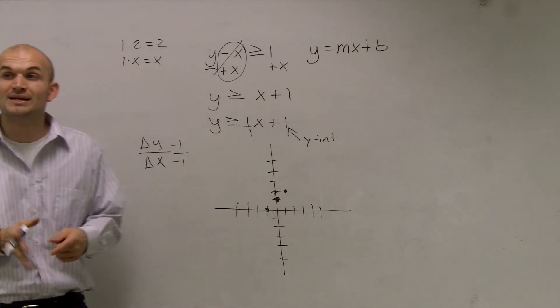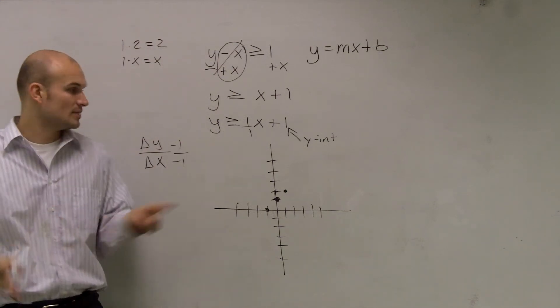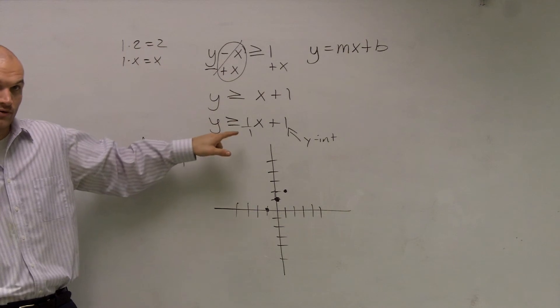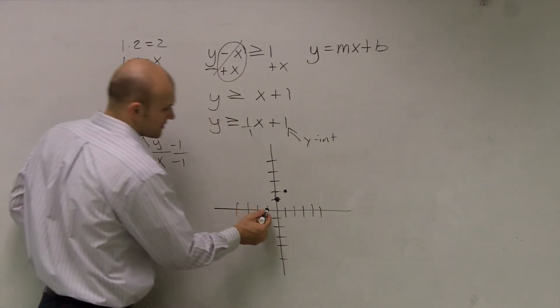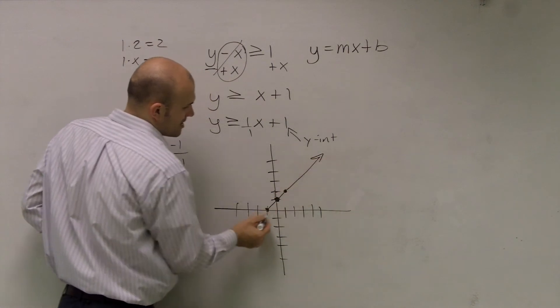Now, then, next thing I need to do is I need to determine, is it going to be a dashed or a solid line? Well, since it's equal to, it's going to be a solid line. Meaning, the line is going to be a part of the solution. So I'll just draw my line there.